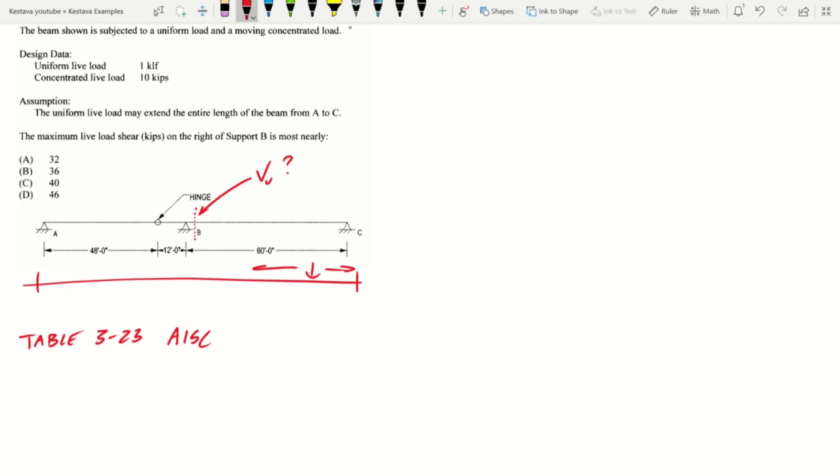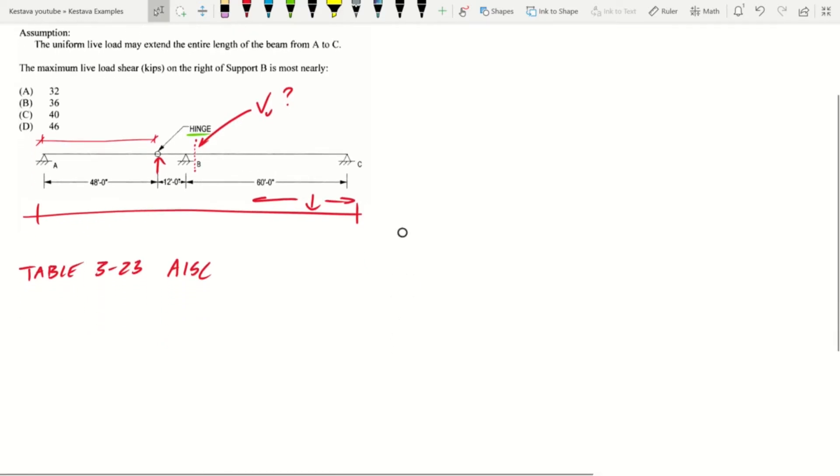So we're going to flip over to table 3-23. And we're going to start, so we have a hinge here. We need to be wary of that hinge. So first we need to find the reaction at that hinge point. And the way that we do that is actually we take this chunk from the hinge to support A.